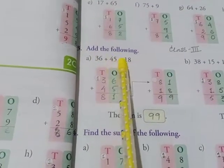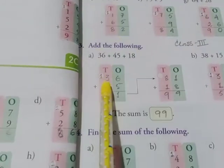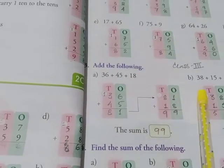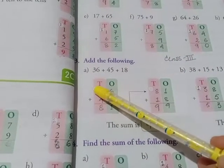Add the following: 36 plus 45 plus 18. At first we add these two. We'll add both of the numbers first. 36 plus 45: 5 plus 6 equals 11, write 1 and carry over 1. 3 plus 4 plus 1 equals 8, so 81.